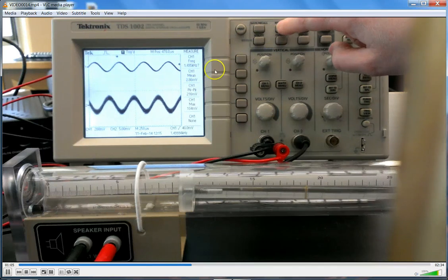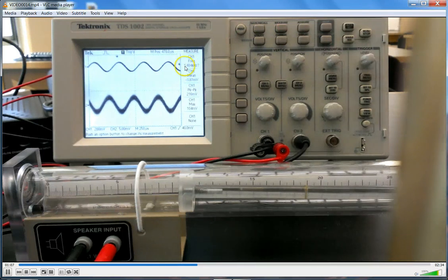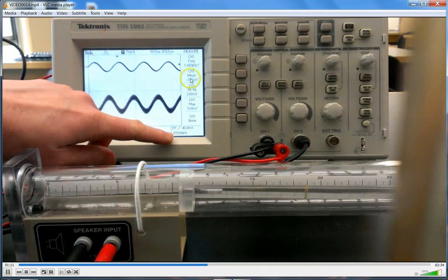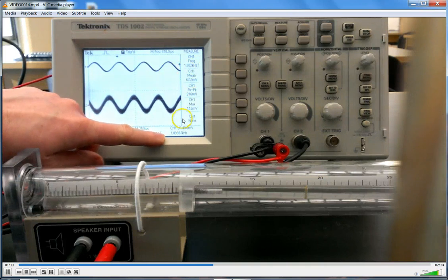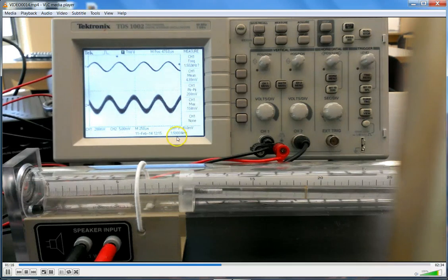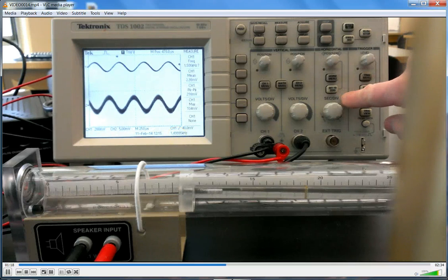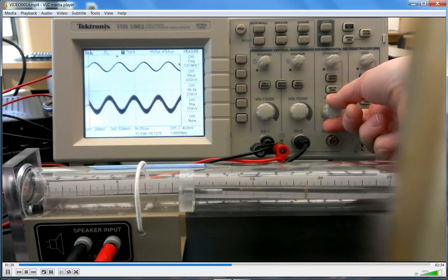The measure function can do some things. One thing it can do is try to get a nice accurate frequency. It'll take the frequency, do some mathematical integrals, and try to get a nice accurate value. You should get lots of sig figs for this one.